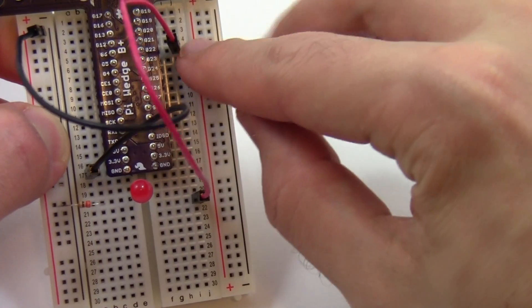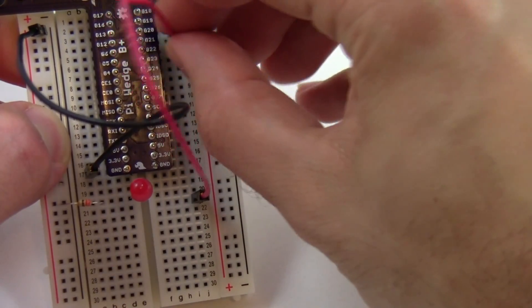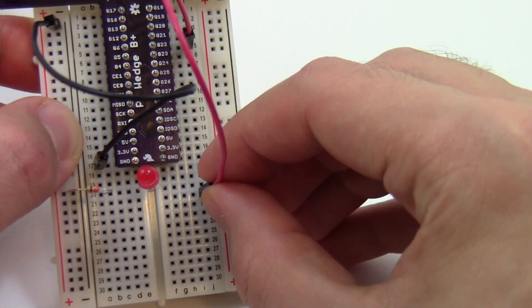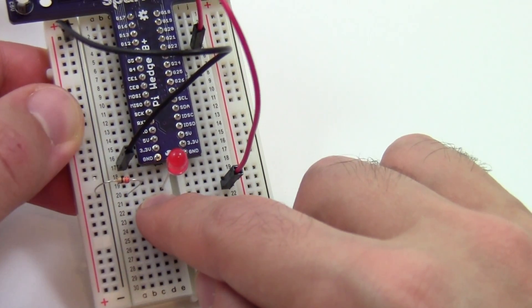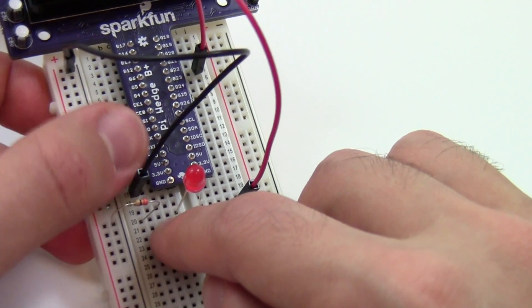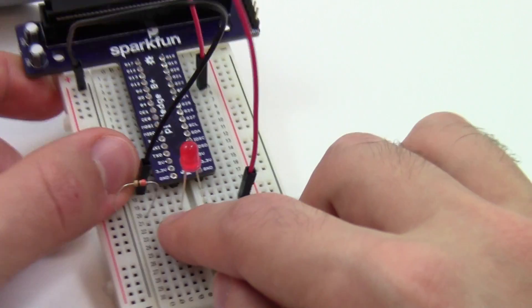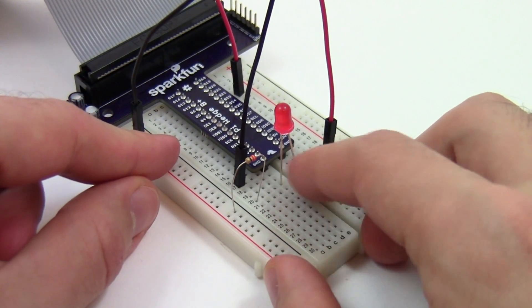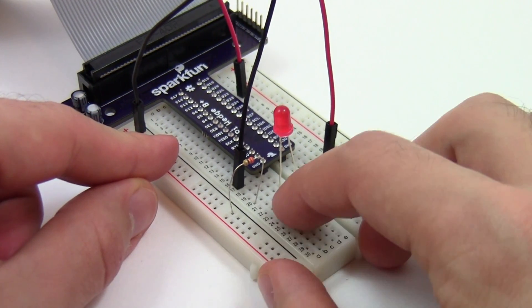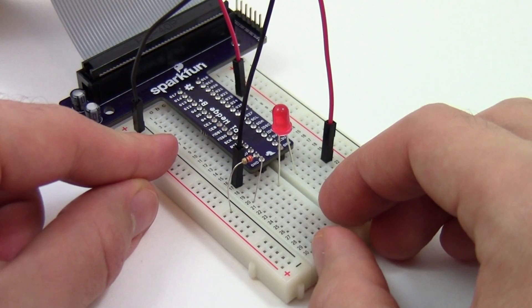You have to make sure, for example, that this end of the jumper wire is connected to the right GPIO pin, then that this end is in the same row as the LED, the resistor is connected to the LED, and then finally that this jumper wire goes back to the ground pin. If any one of those connections is off by just one row, that will break the circuit and prevent current from flowing and stop the LED from lighting up.